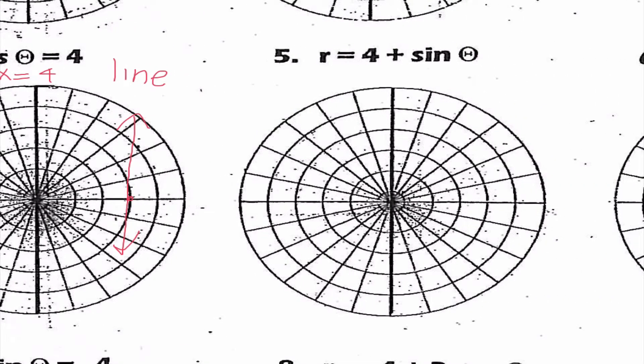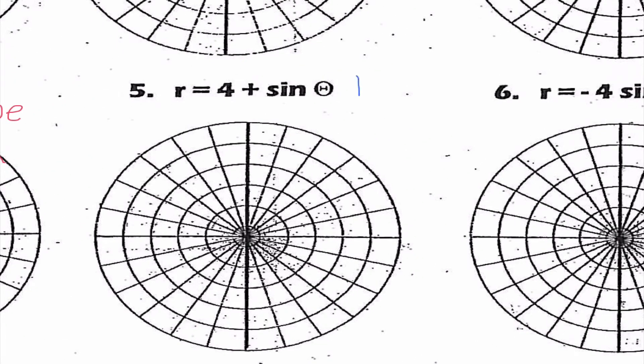Number five, r equals four plus sine theta. The thing that jumps out to me is this plus sign. So I'm thinking that this is a limaçon. Now, I'm not quite sure what kind of limaçon it is yet, so I have to compare those different values, the absolute value of four and the absolute value of one. The absolute value of four is greater than one, so I know that this is going to be dimpled.